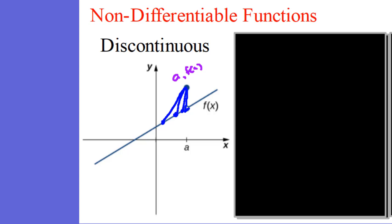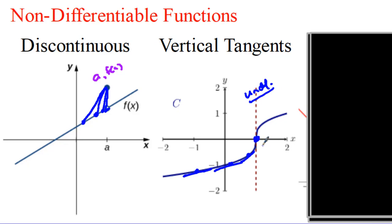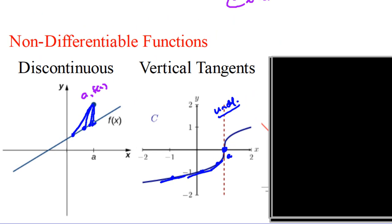If a function is not differentiable, that does not mean it's not continuous. For example, consider a vertical tangent — this looks like a pH titration curve. You can see right here the function is continuous. But as we get closer to this point, the slope of the tangent line becomes an undefined value. So if we have a vertical tangent, we are not able to differentiate at that point. Point a is not differentiable because the slope is undefined there.